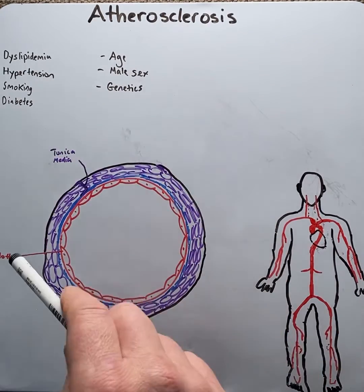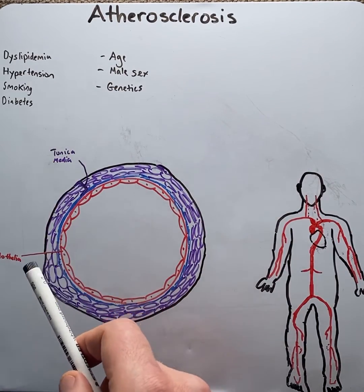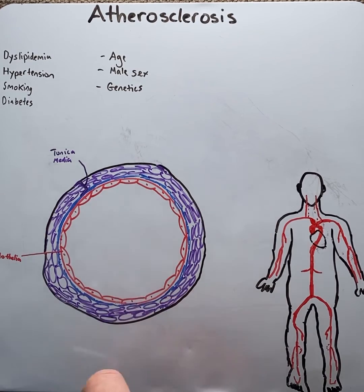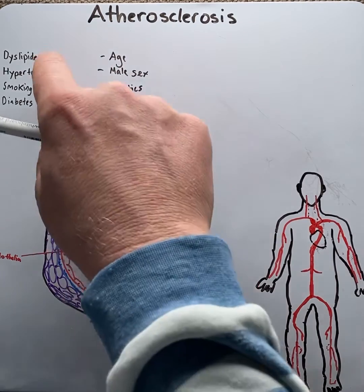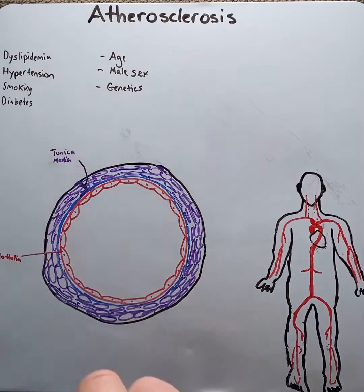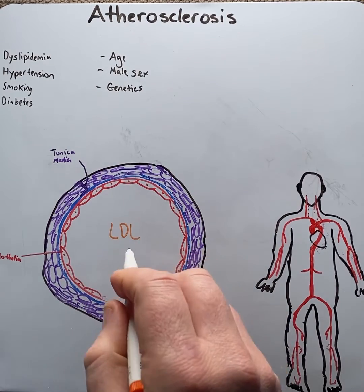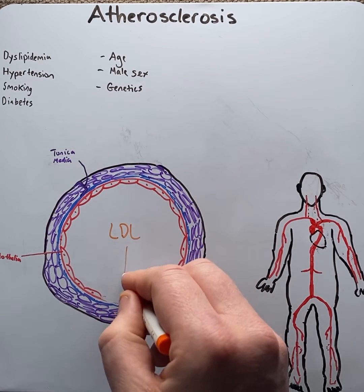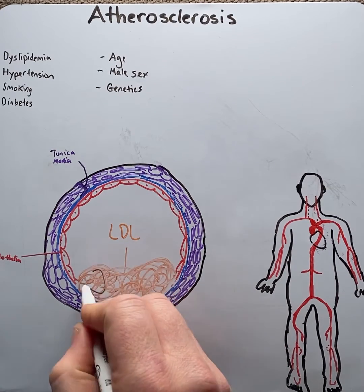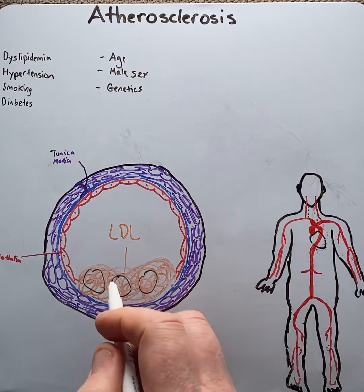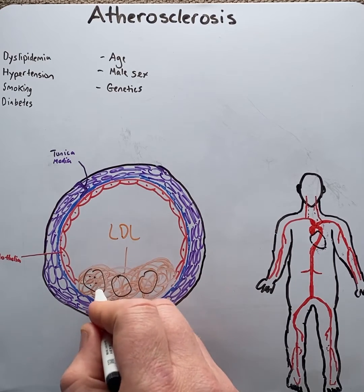Here we have an artery in cross-section to demonstrate the pathogenesis of atherosclerosis. The formation of atherosclerosis requires an initiating event, usually known as chronic endothelial injury. This can occur through things like the shear stresses in hypertension or the chemicals in smoking. Once the endothelial injury has occurred, fats — in this case LDLs or low-density lipoproteins — will start to accumulate in the wall of the artery.